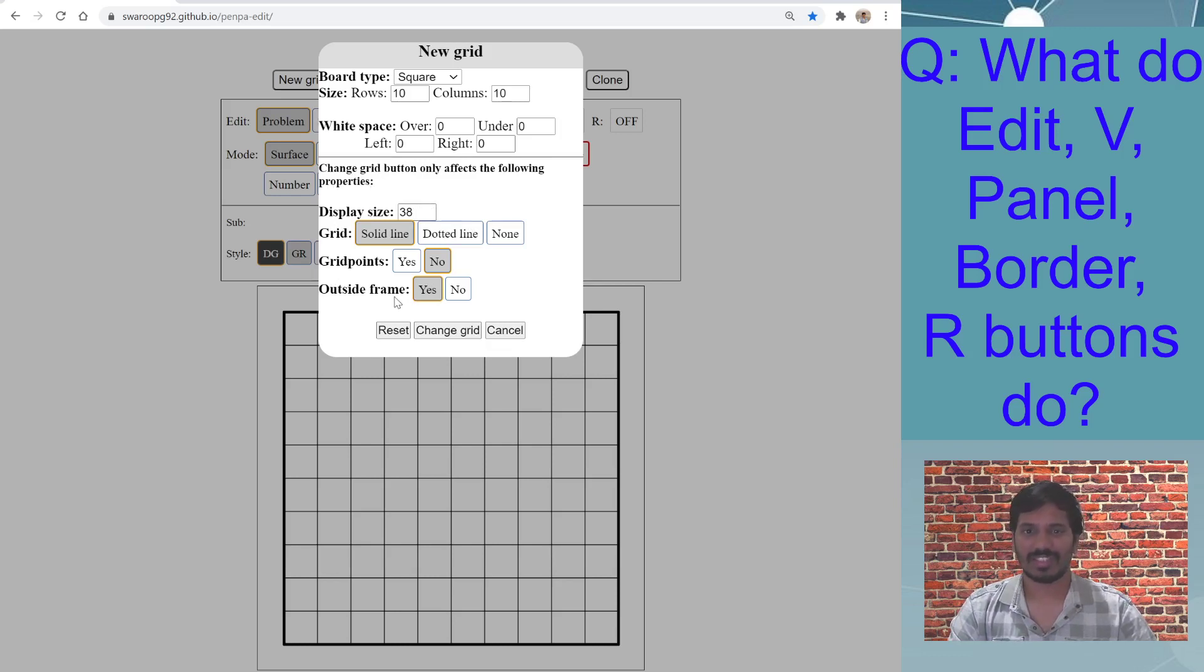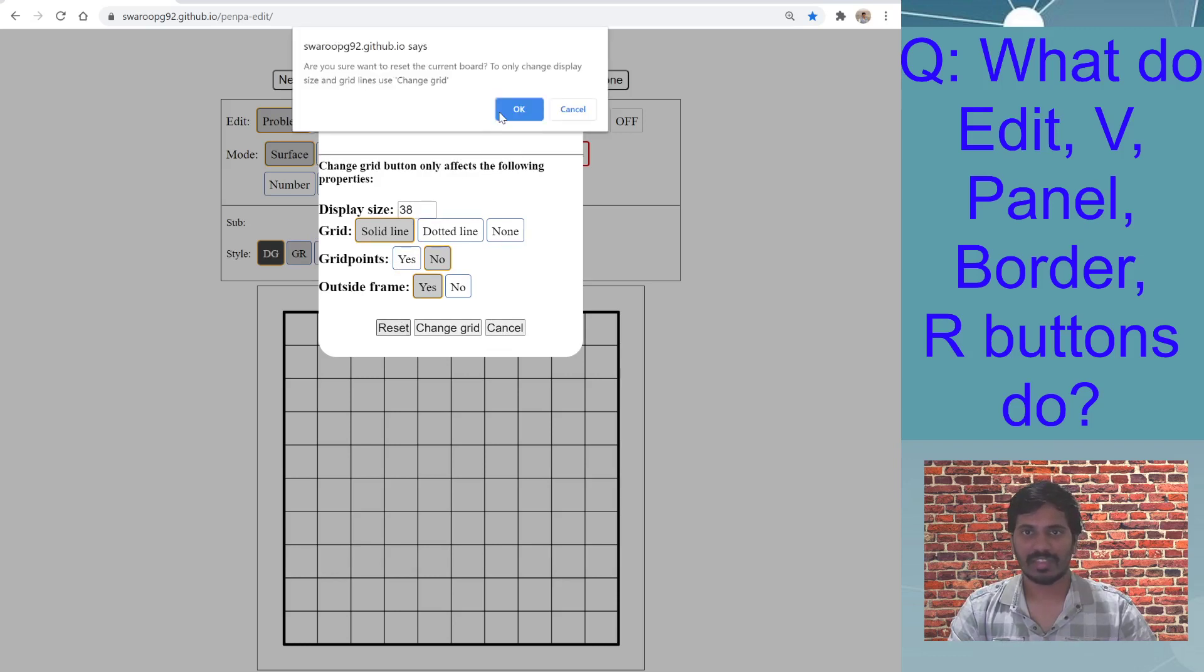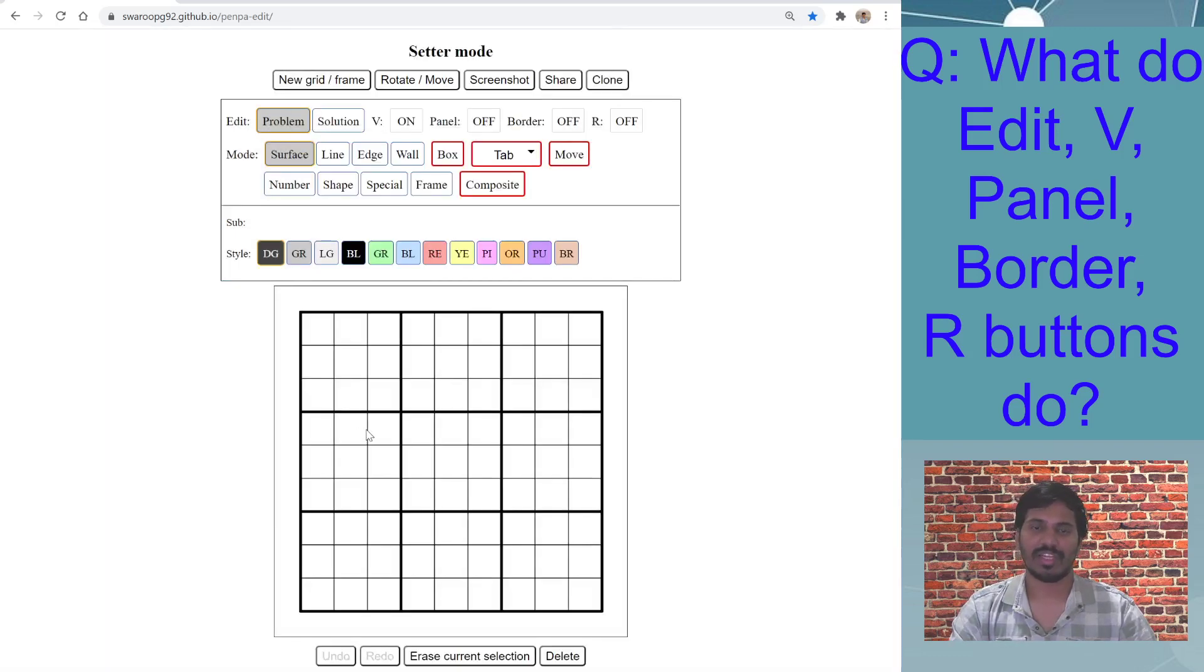I will set my board for today's Sudoku, everything else default. There we have it. In today's video, I will be talking about this row of buttons, which is Edit, V, Panel, Border, and R.